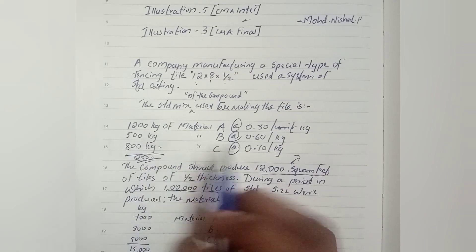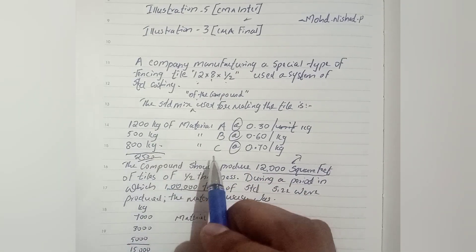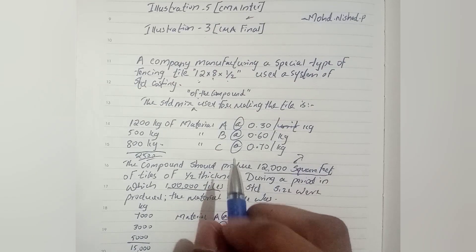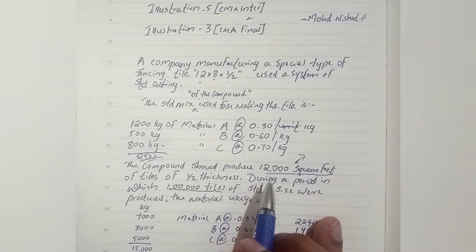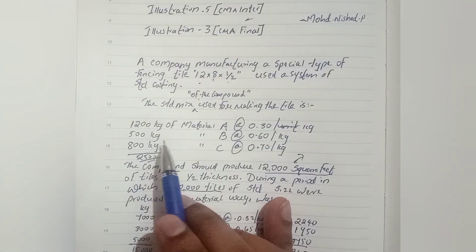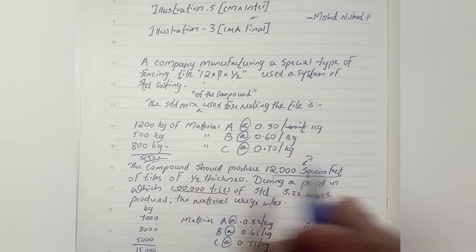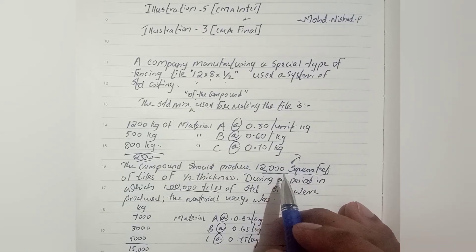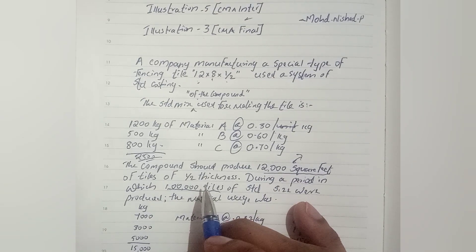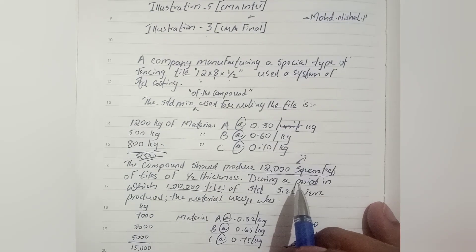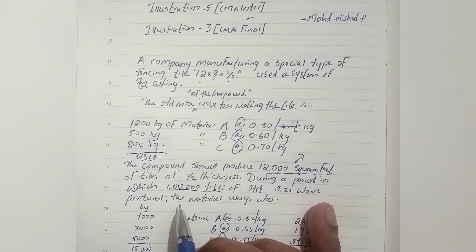The standard mix is: A-250, B-250, C-250 kg. So the company should produce from 250 kg of material an output of 15,250 square feet. The thickness of the tile is standard. During the period, 1 lakh tiles of standard size were produced.